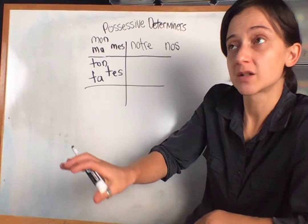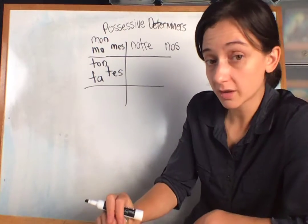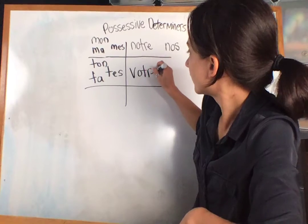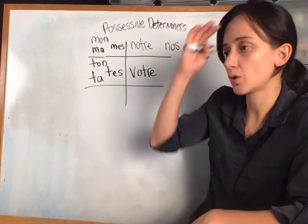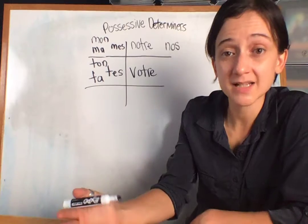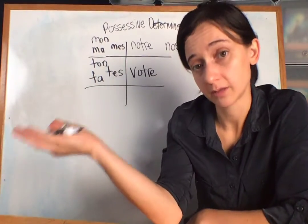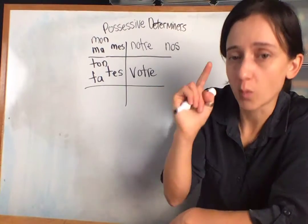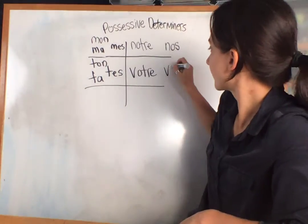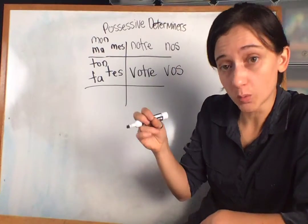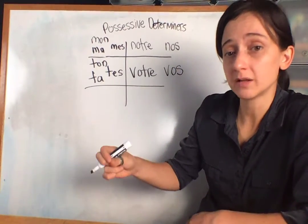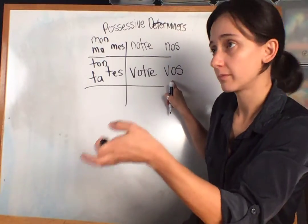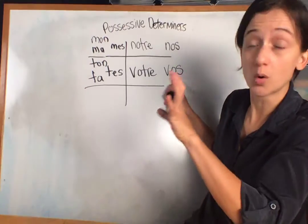For votre, your. Now this could be your formal or it could be your like y'all's. Votre grand-mère, your grandmother. So I'm talking to a couple of my friends and I would say your grandmother, y'all's grandmother. It's still one grandmother. But I would say vos grandparents, your grandparents. So I'm speaking to multiple people about their multiple belongings.